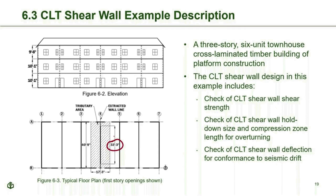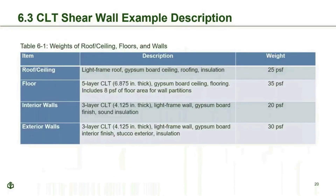The example uses load and resistance factor design (LRFD) to be consistent with the NEHRP provisions design format. Allowable stress design is also permissible under ASCE 7 and SPIDWIS and will provide an equivalent design. Weight assumptions: roof/ceiling (light frame) is 25 psf; floor (five-layer CLT) is 35 psf; interior walls (three-layer CLT, wood frame, gyp, sound insulation) are 20 psf; and exterior walls (three-layer CLT, wood frame, exterior stucco finish) are 30 psf.